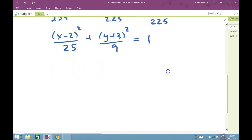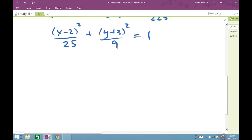Now we need to find the center and the vertices and the foci and endpoints. So the center is (h, k). This is my h term right here, this is my k term. So my center is (2, -3), because in the standard equation, it's (x - h)² and (y - k)². Because we have a +3 here, this becomes -3. So this is where my center of my ellipse will be.